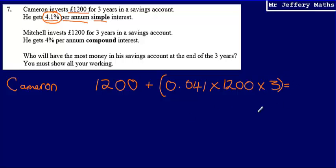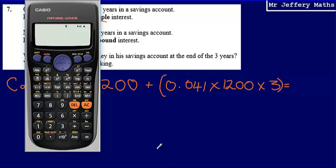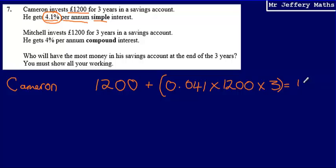So the amount that Cameron will have at the end is going to be £1,200 plus 0.041 multiplied by £1,200 multiplied by 3. And that is going to give us £1,347.60. So Cameron will have £1,347.60.